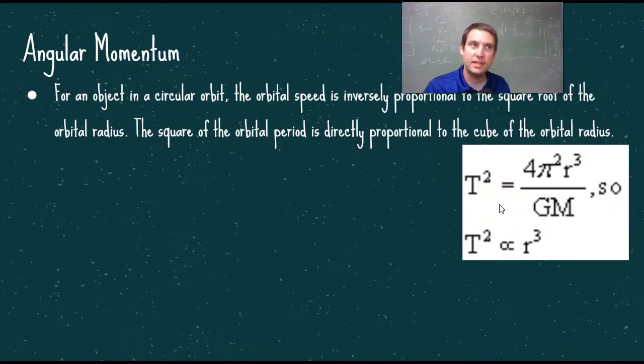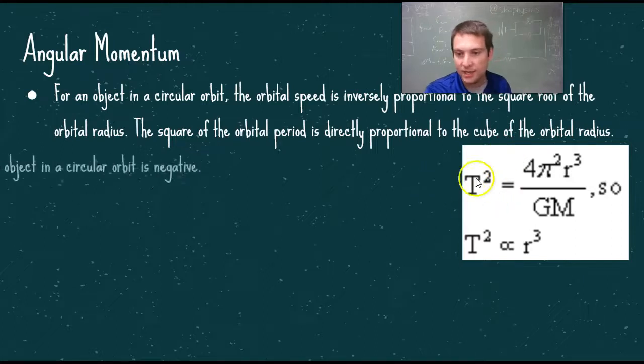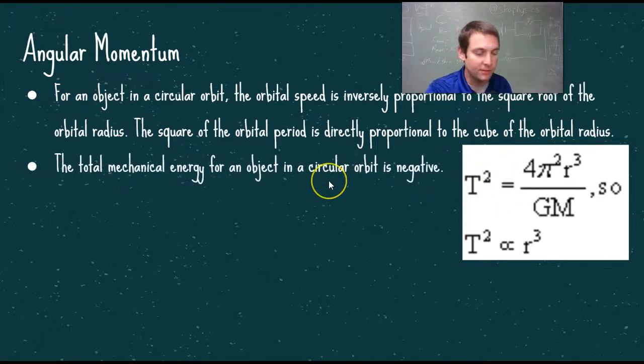This can be derived by setting Newton's law of universal gravitation equal to centripetal force and solving for T. Remember that velocity is distance over time, and if you go around a circle, that distance is 2πr divided by capital T, the period, or the time that it takes for one complete revolution.